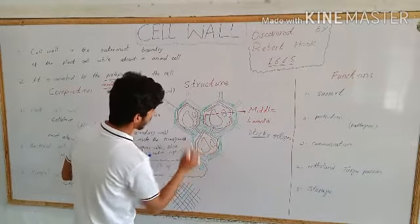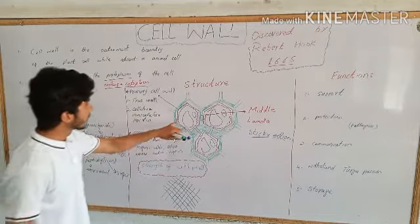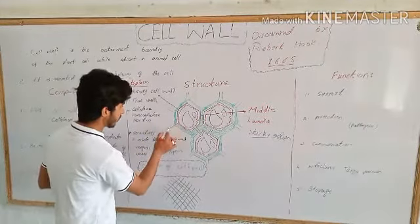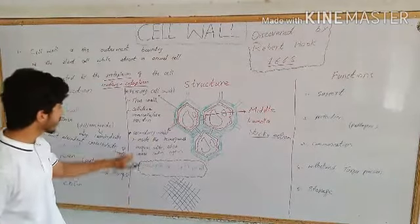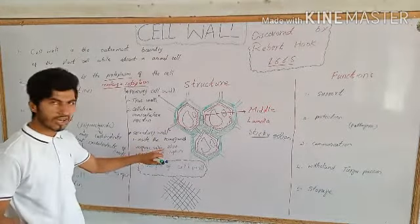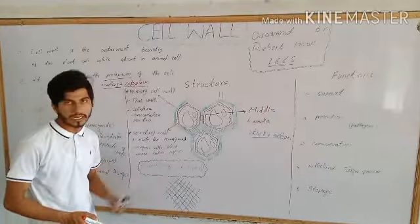The primary cell wall also contains suberin, waxes, cutin, and lignin.